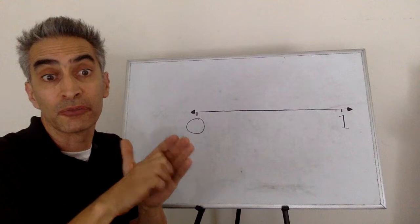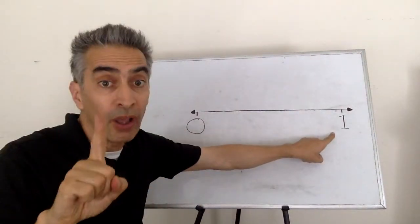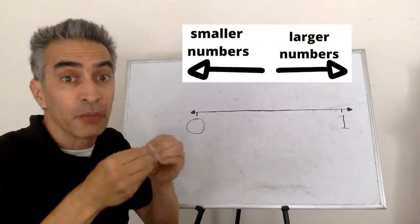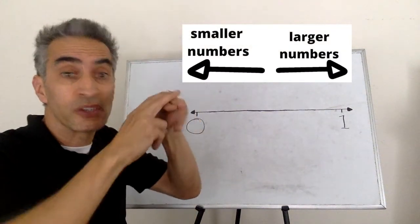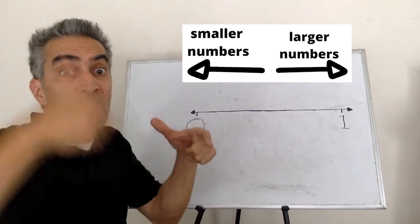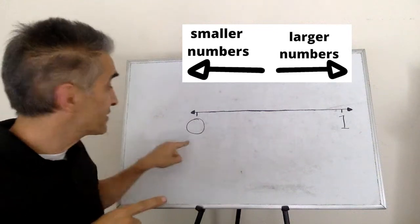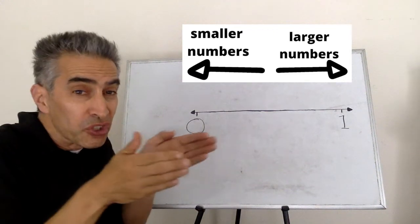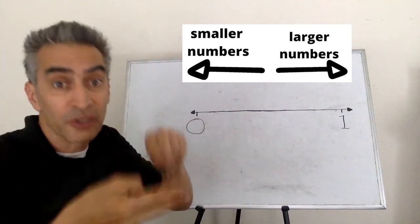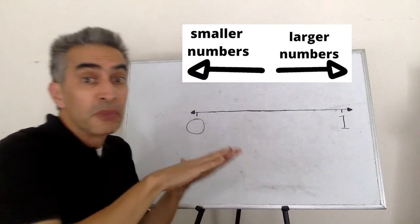Now we've got another example. Notice that this one is the largest number because the numbers increase as we go to the right. And notice the number zero is the smallest number because as we go to the left the numbers decrease in size and become smaller.